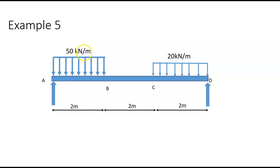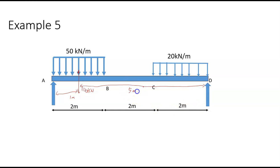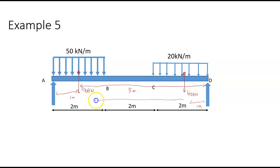So this is 50 kilonewtons per meter over 2 meters, which is the same as having 100 kilonewtons at a distance of one meter. And this is the same as having 20 kilonewtons by 2 meters, that's the same as 40 kilonewtons, and that distance is one meter, which means that distance is five meters also. So let's take the moments about A.